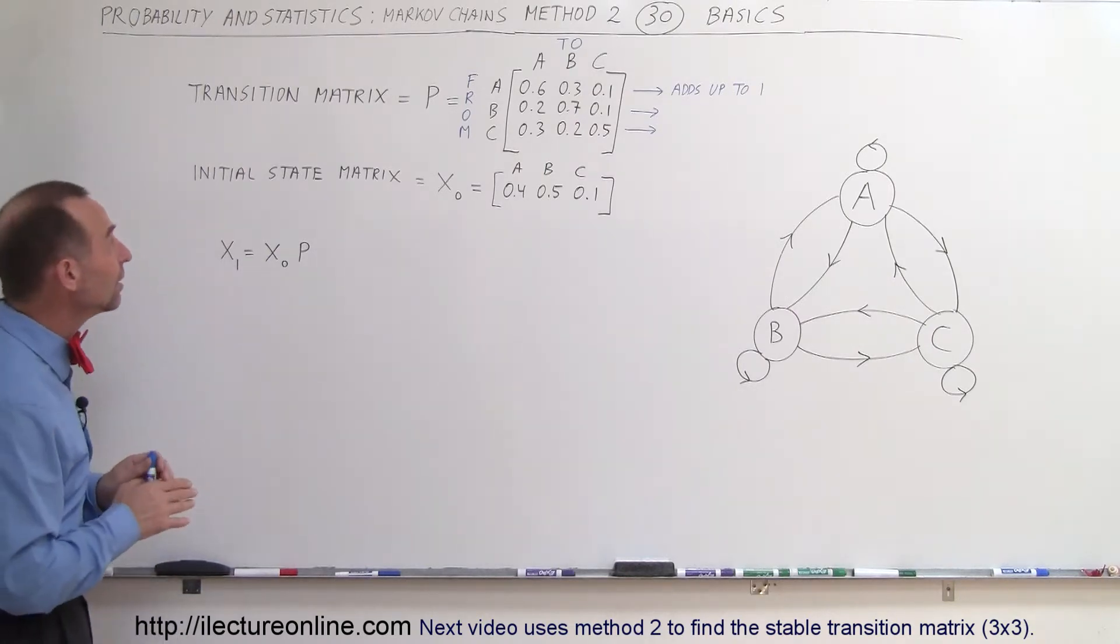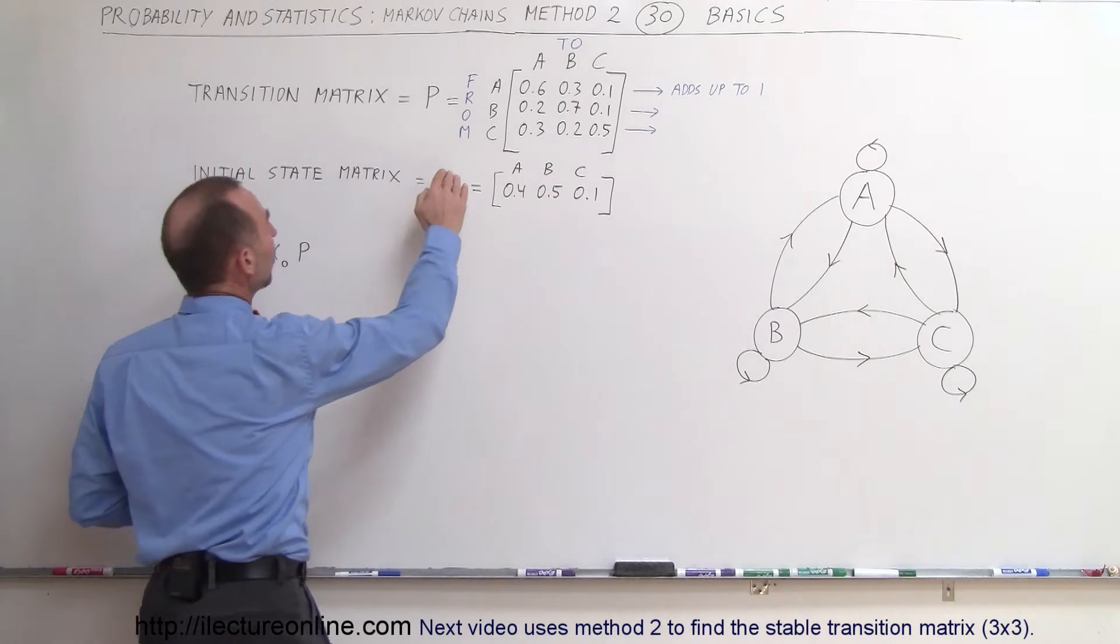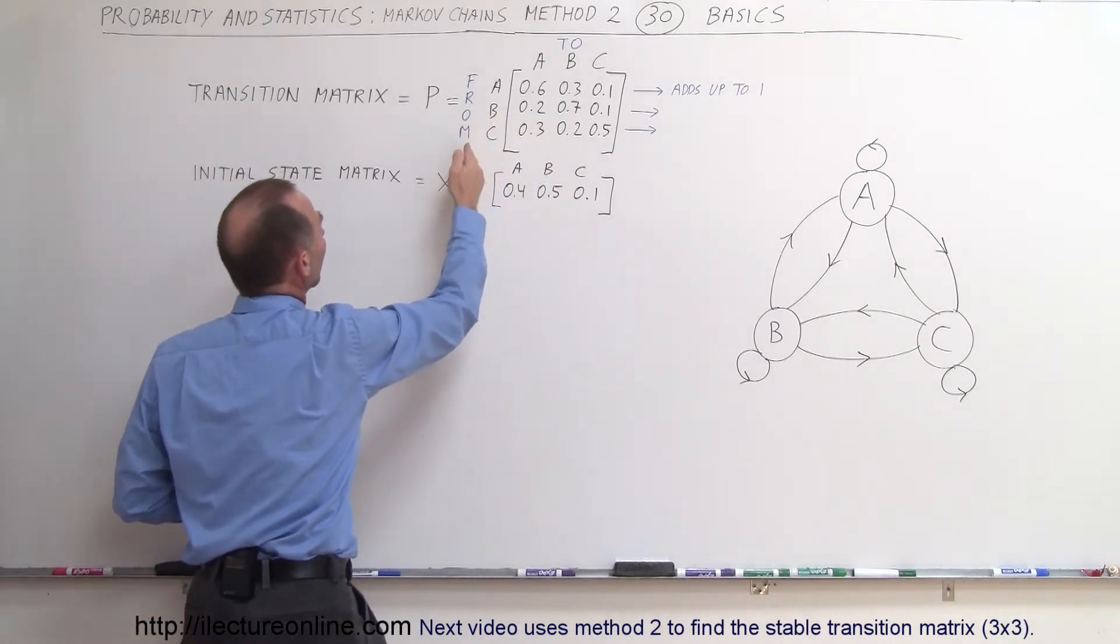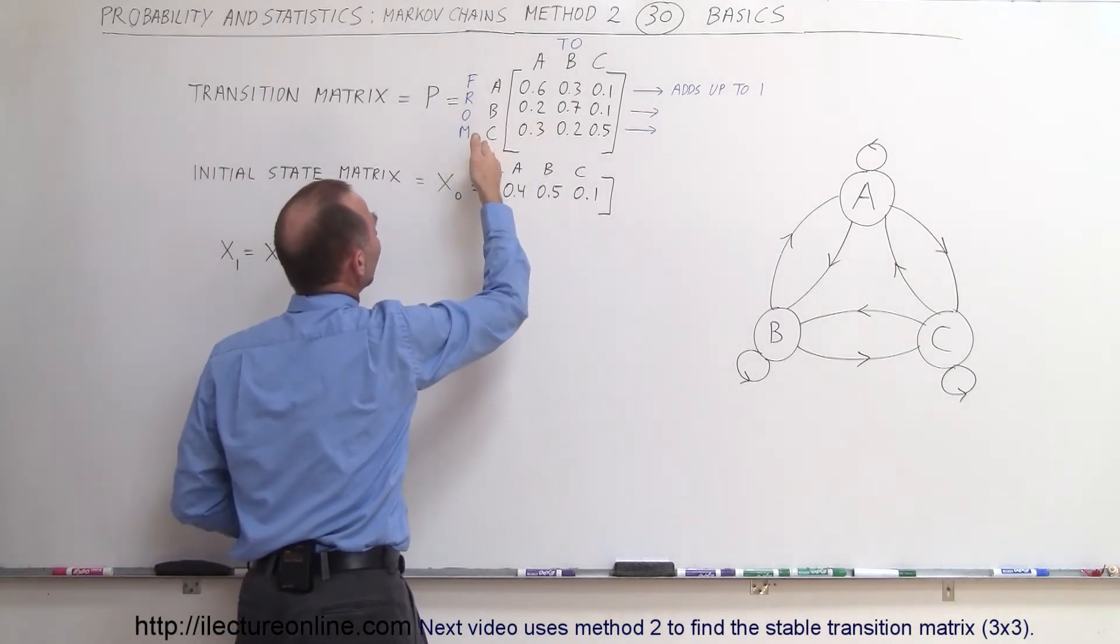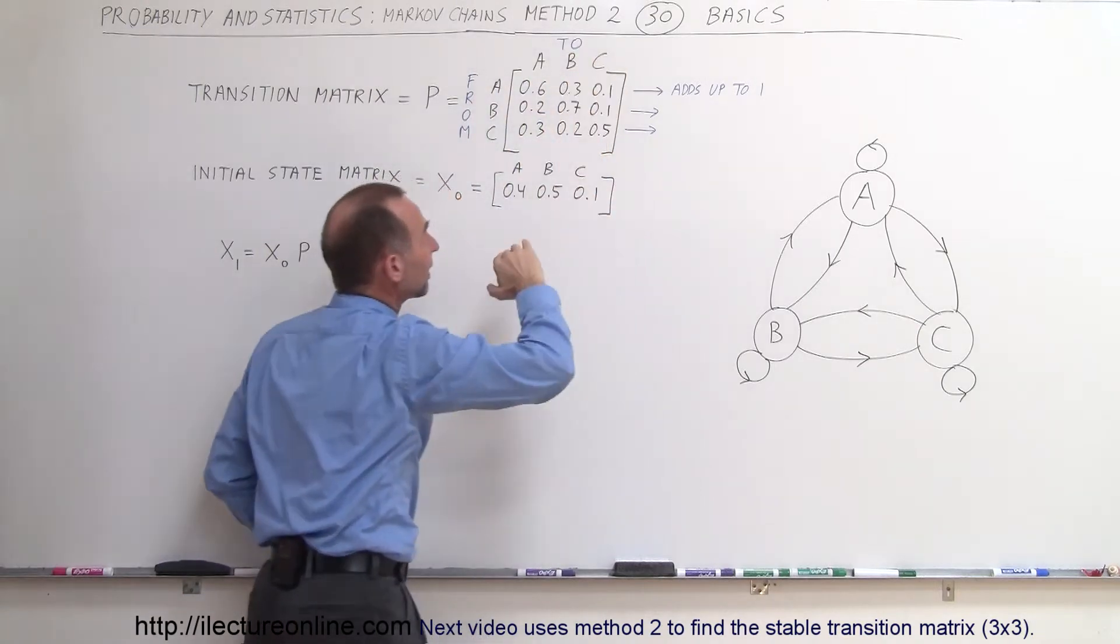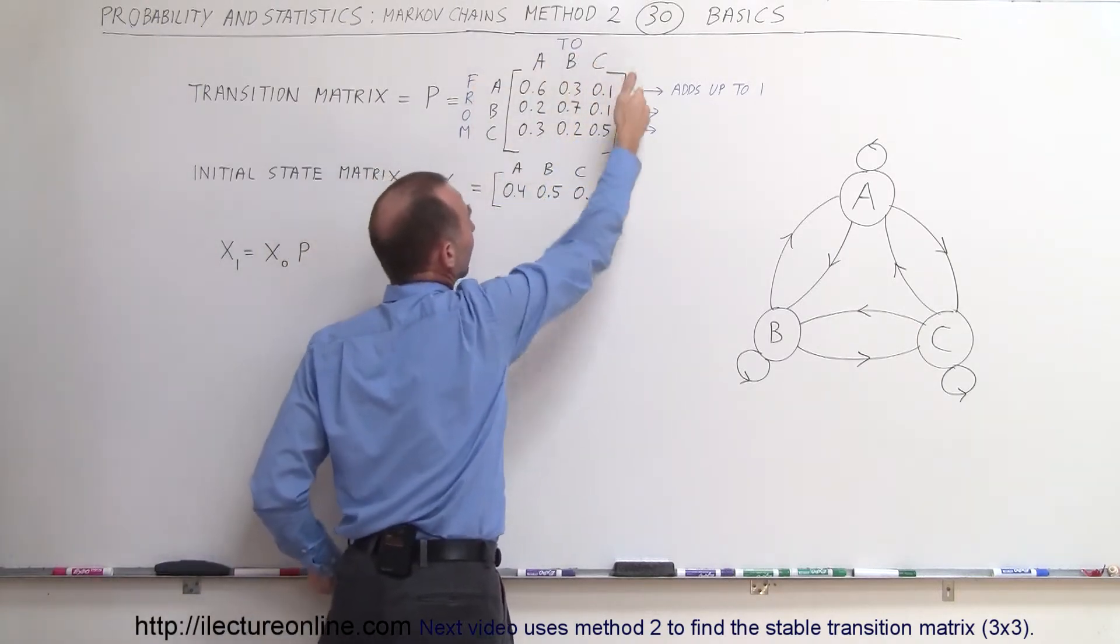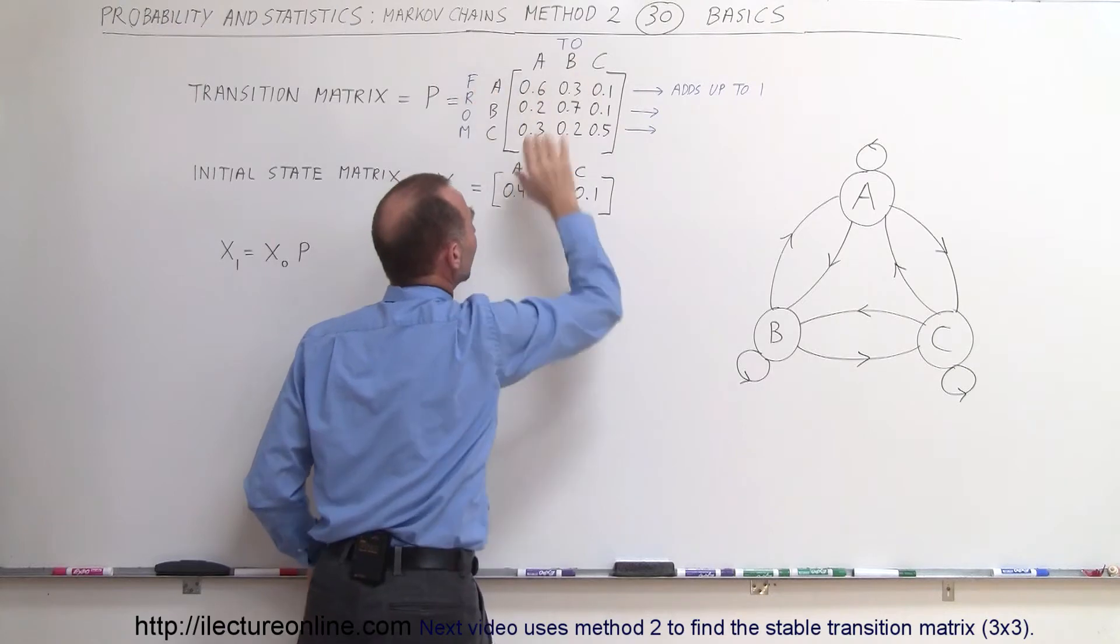And the big difference between them is if you look at it here where if you have the transition matrix the from states are put on the left side and the to states are put on the top. Remember the method I showed the from were at the top and the to are on the side here so this is different.